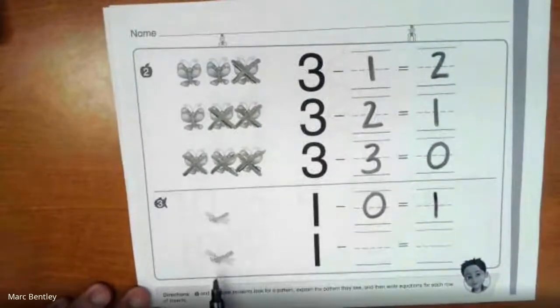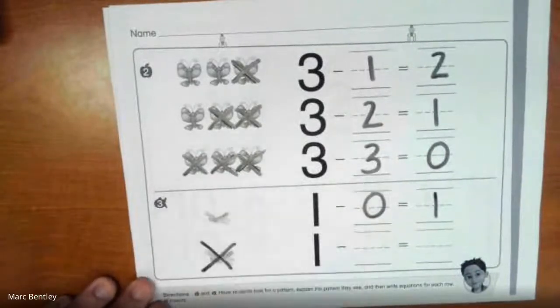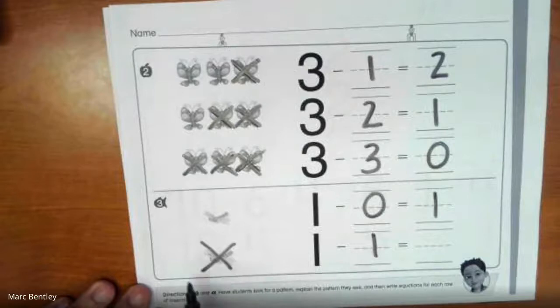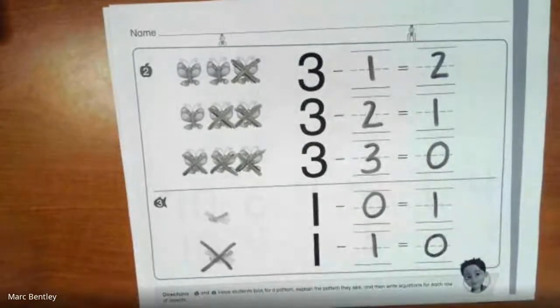Now down here, we have 1. This time we're going to take them away. It flies away. 1 minus 1 equals... How many do we have left? You said 0? You're right. 1 minus 1 equals 0. Okay, turning the page.